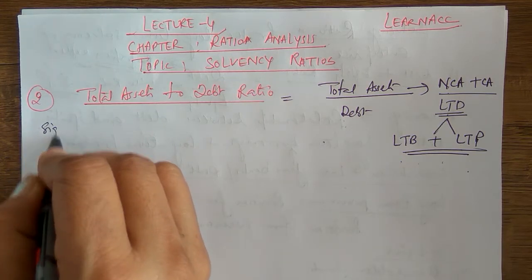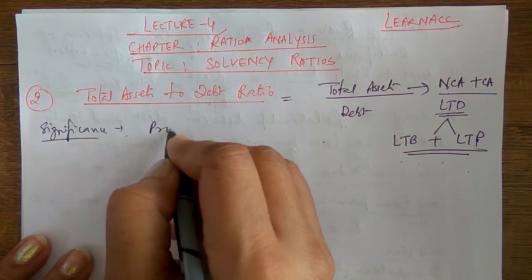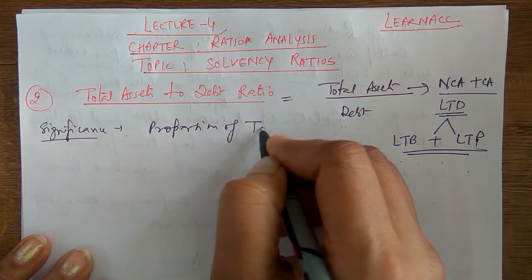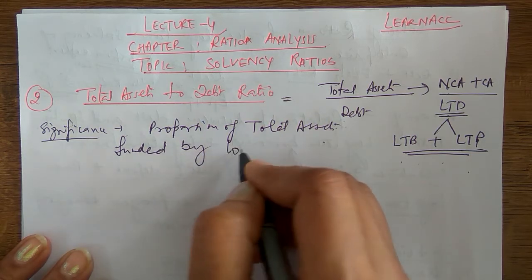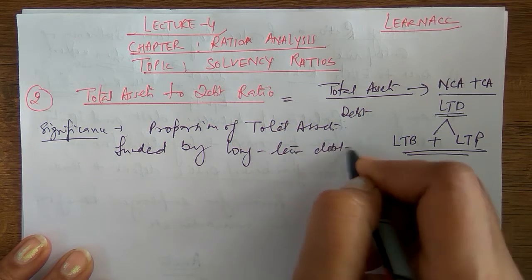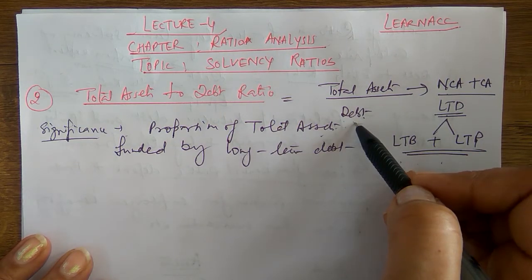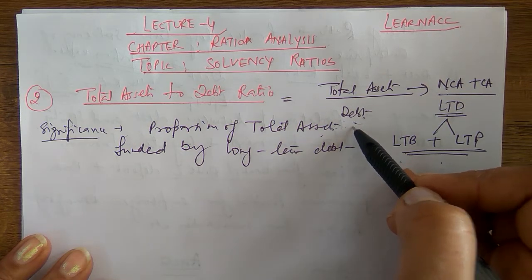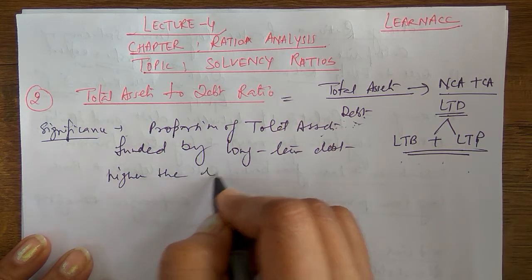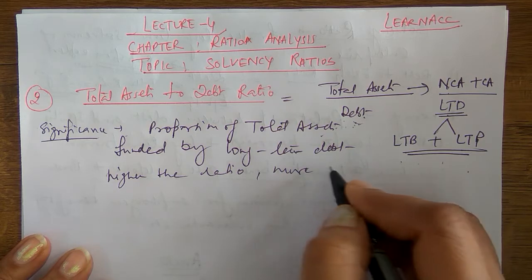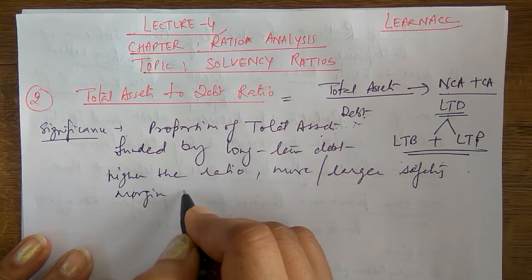What is the significance and objective of this ratio? It measures the proportion of total assets funded by long-term debt — that is, how much of the enterprise's total assets are financed by long-term debt. Higher the ratio, more or larger the safety margin to lenders.